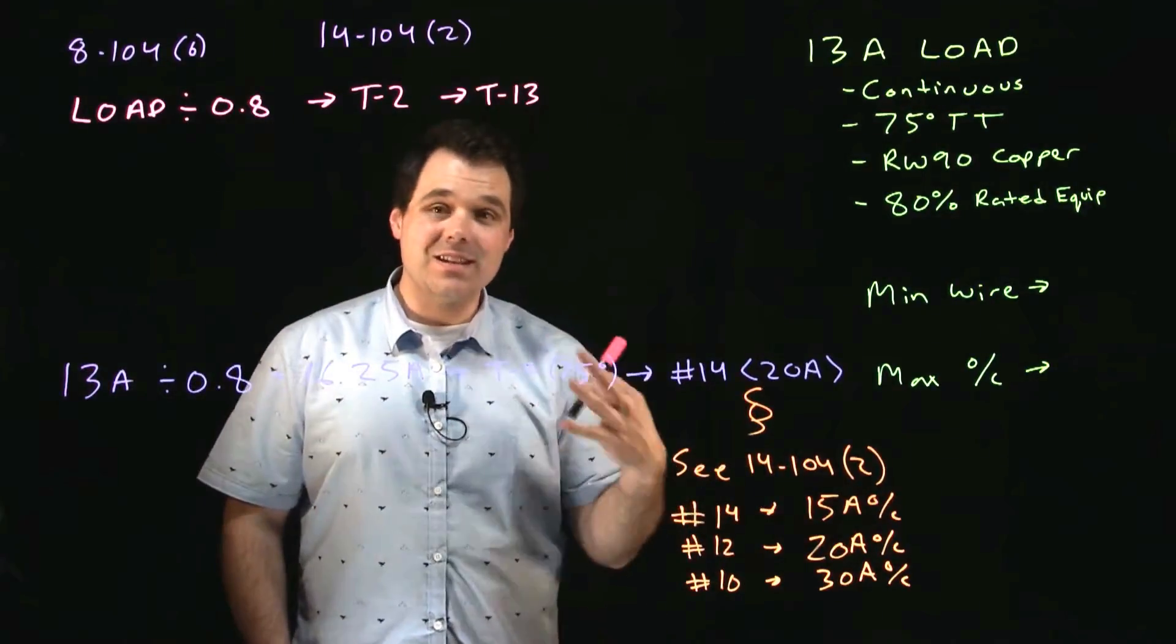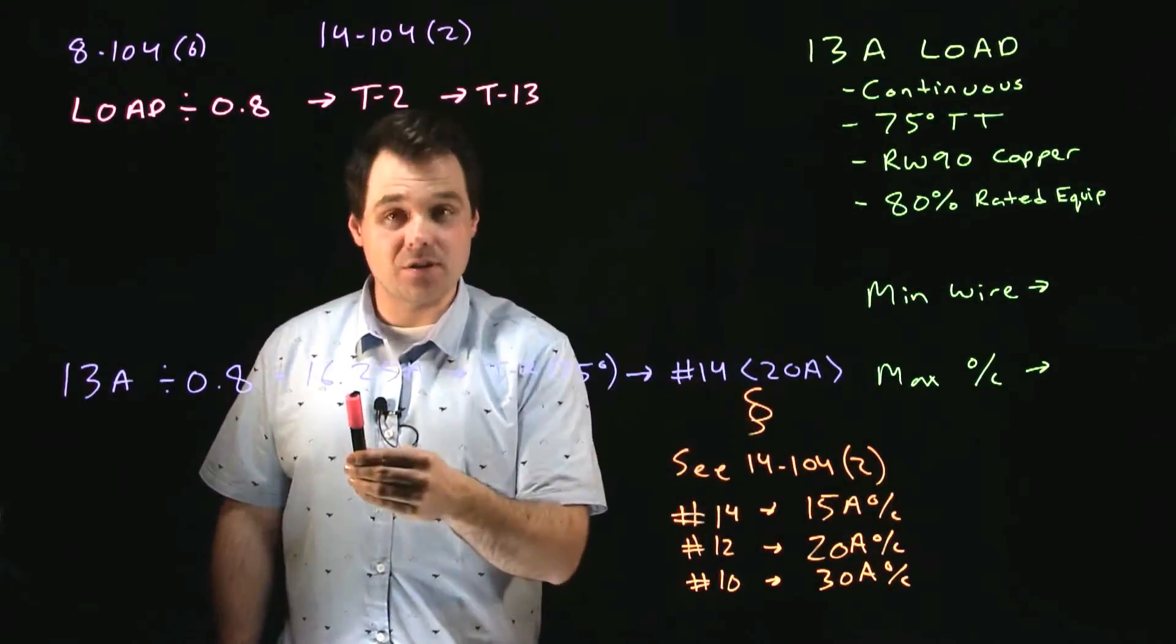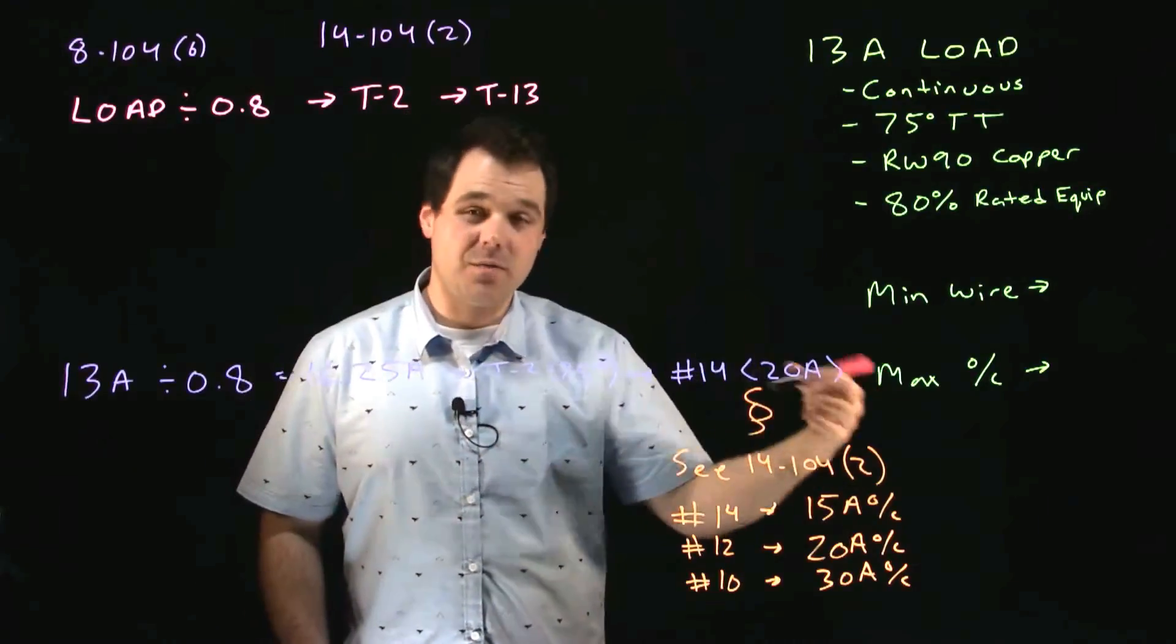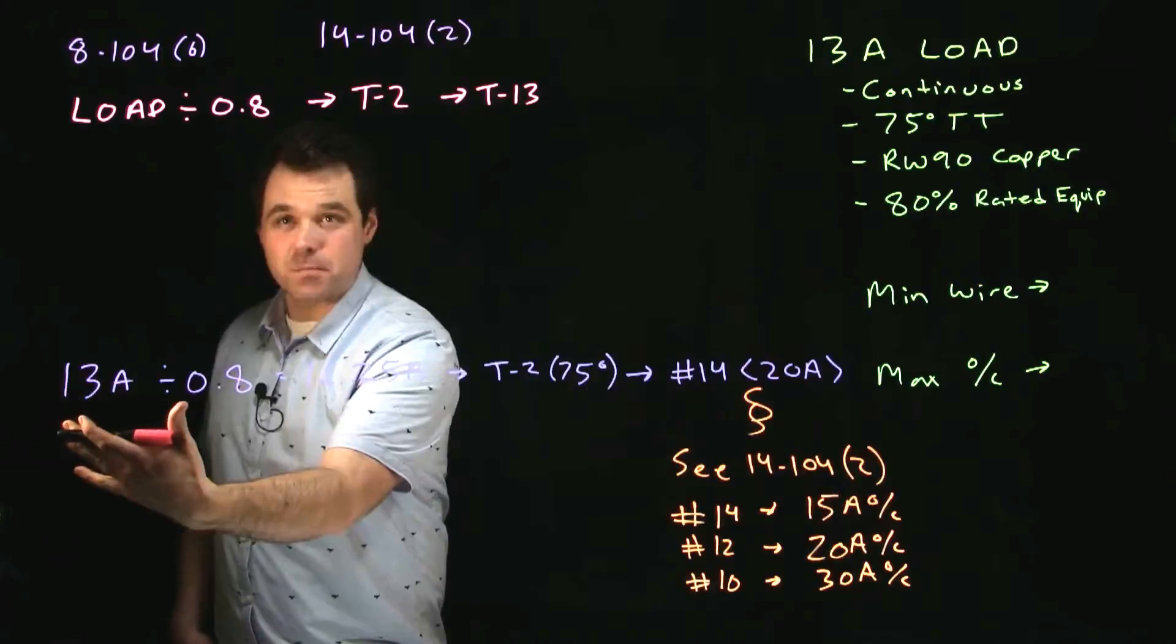Which means in this case we actually need a 20 amp breaker. Because 20 amps would be bigger than the 16.25 and if we got 80% of that 20 amp breaker would be 16 amps which is big enough for my load.